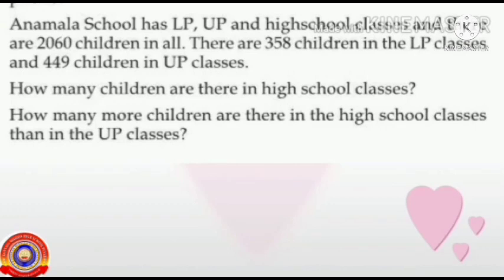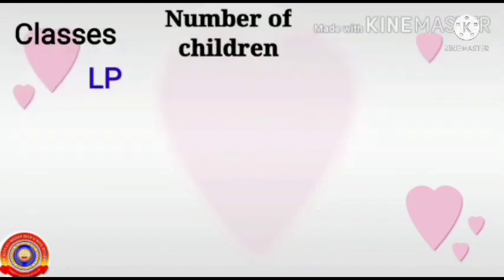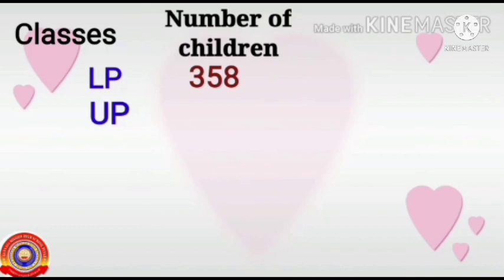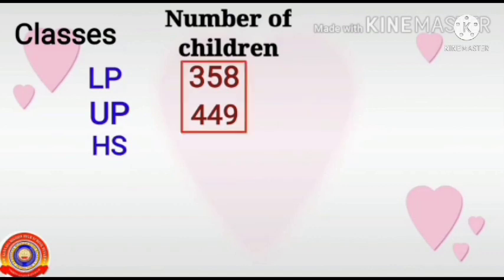How many children are there in LP classes? 358. How many children are there in UP classes? 449. To find out the number of children in high school classes, at first we have to add 358 with 449.